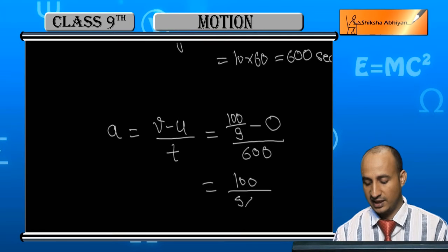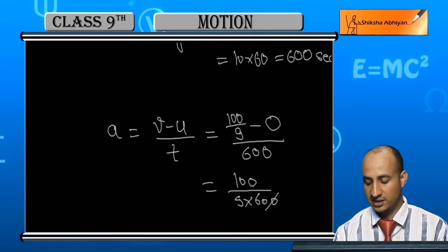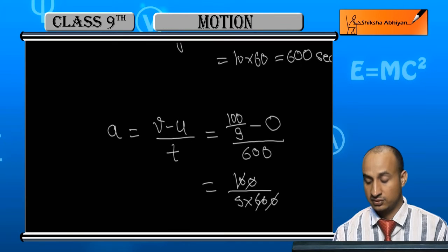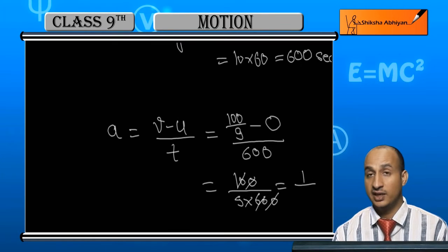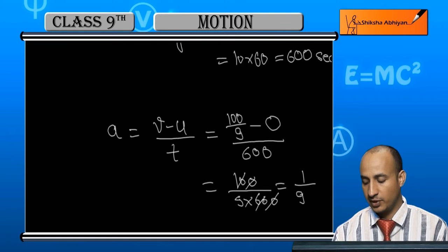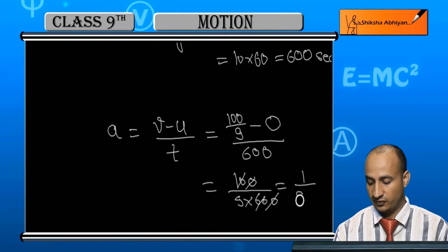What will happen? This will be 100 upon 9 into 600. Here 100, 100 cancel out. So how much? 1 upon 9, 6. This is here 54.